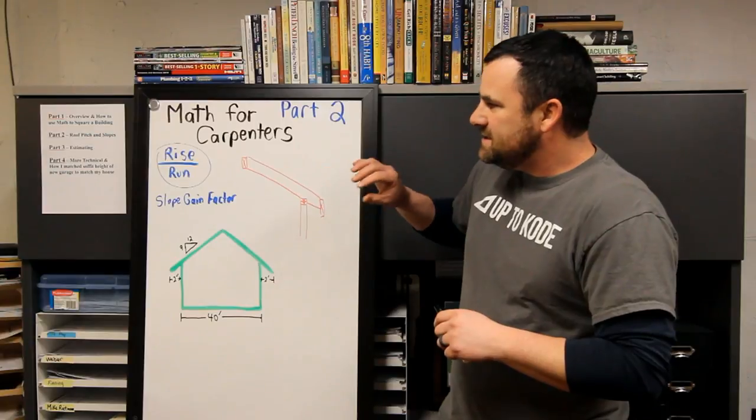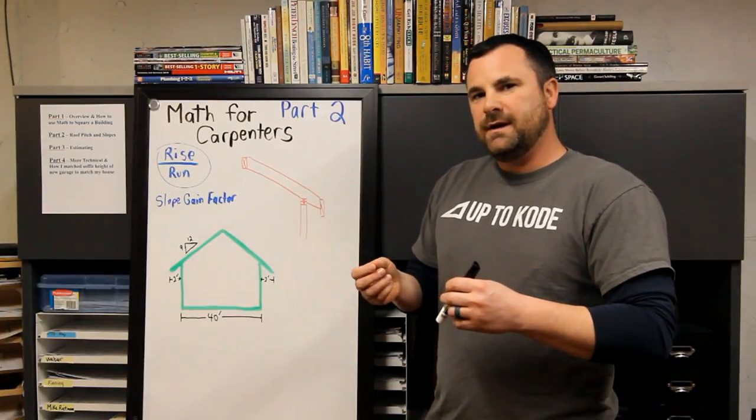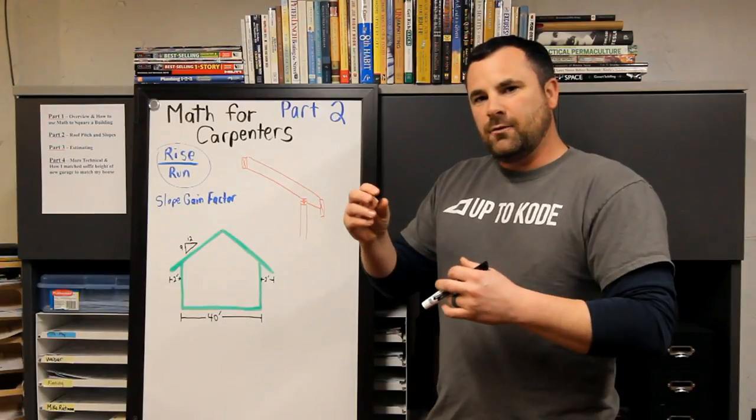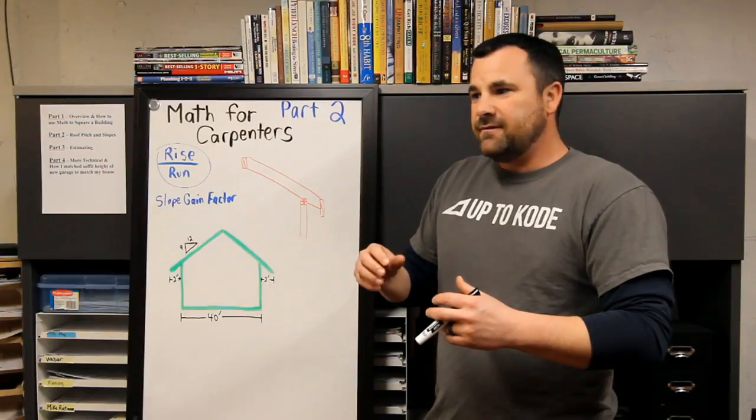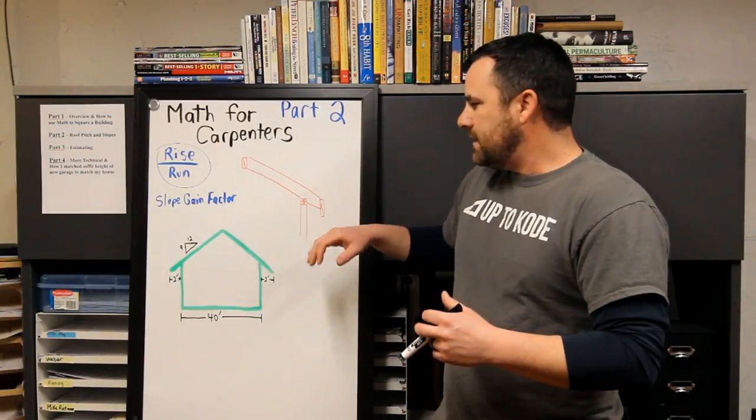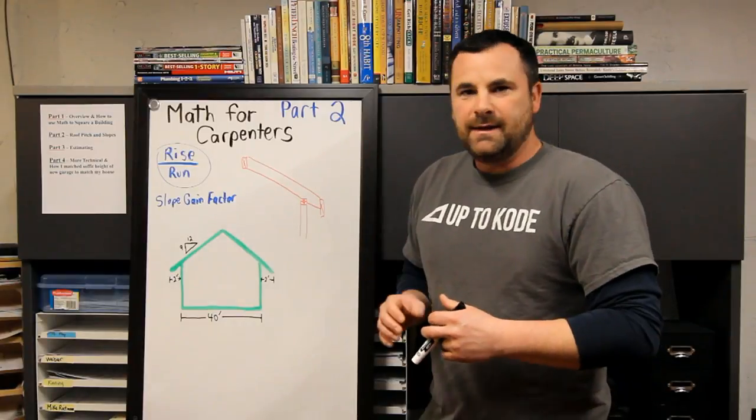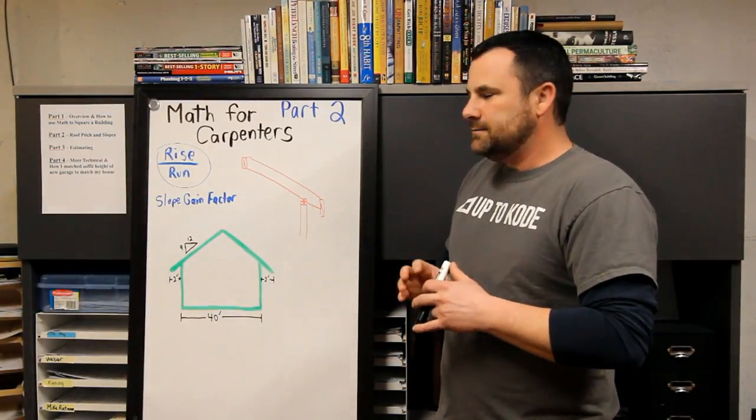Part two, we're going to run through roof pitch and slopes. A lot of math in carpentry is manipulating rise over run to figure out lengths, areas, and even more technical stuff like rafters if you're stick framing rather than just trying to guess your way through it.